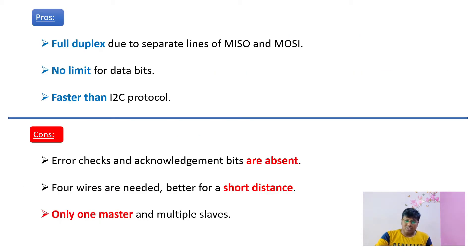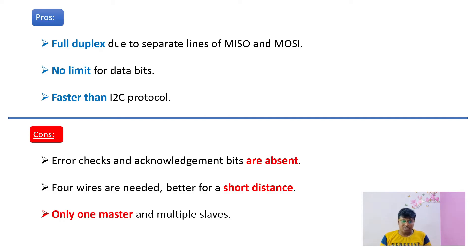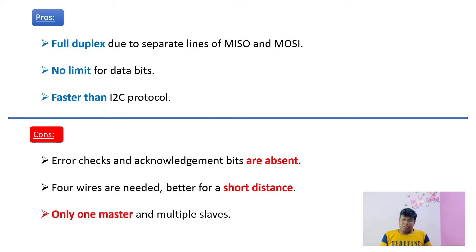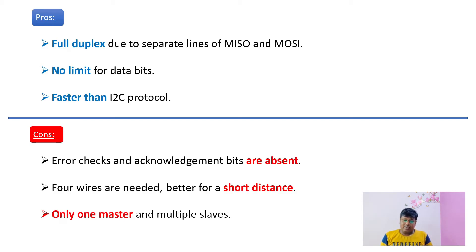The advantages of SPI: first, it is full duplex communication, allowing master and slave to talk simultaneously via separate MOSI and MISO lines. Second, there is no limit on data bits, which can be configured in the SOC register. Third, SPI is much faster than both I2C and UART, reaching up to 60 Mbps. The main disadvantage is that SPI has no error checking mechanism and no acknowledgement bits, unlike UART which has a parity bit.